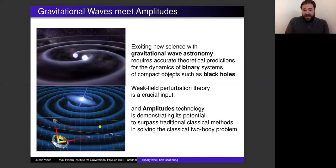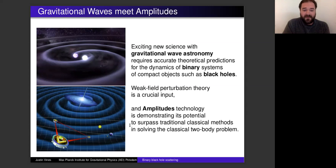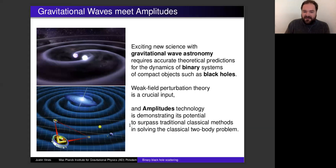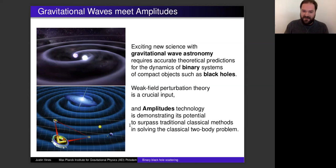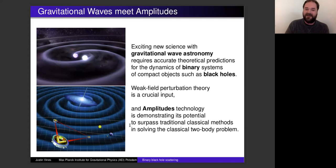The context has to do with the exciting new science of gravitational wave astronomy, with detectors like LIGO and the soon-to-be gravitational wave detectors in space. We are really now just at the beginning of this exciting new field where we detect ripples in the fabric of spacetime coming from the inspirals and mergers of binary systems — mostly composed of what we think are black holes, and sometimes neutron stars as well.